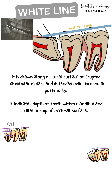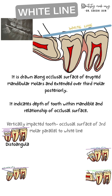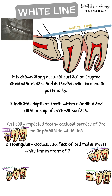There are different scenarios for the impacted third molar. If the third molar is vertically impacted, the occlusal surface of the impacted molar is parallel to the white line. If it is distoangularly impacted, the occlusal surface of the third molar will meet the white line in front of the third molar.